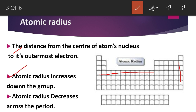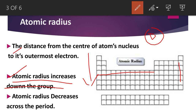As we move downward in a group, the atomic radius increases. This is because the outermost electron occupies a shell that is farther from the nucleus. First we have the nucleus, then one shell. When that shell is filled with electrons, another shell begins, and after that another. So the radius increases, and in every period there is an increment of one shell. Hence, atomic radius increases down the group.